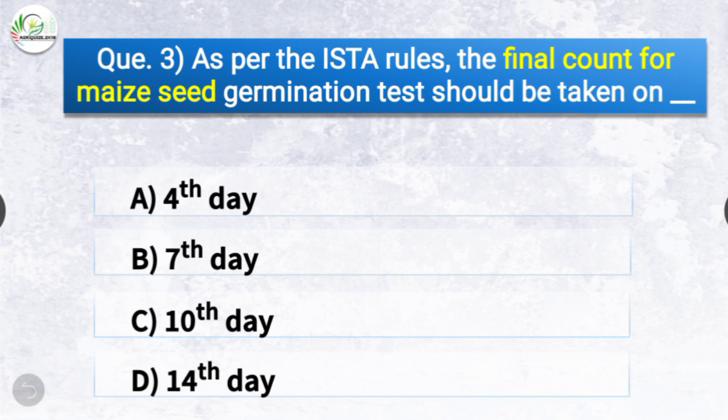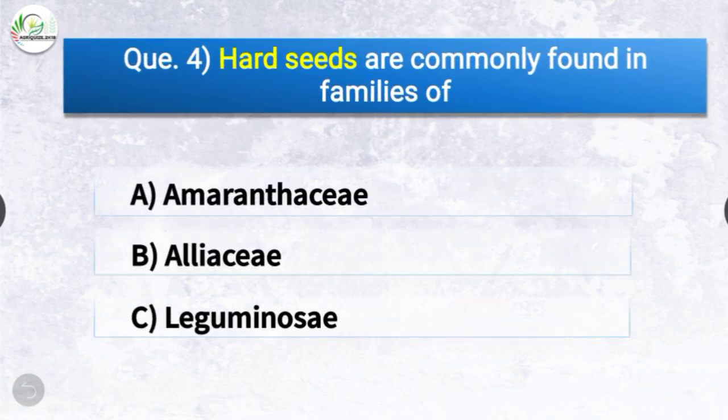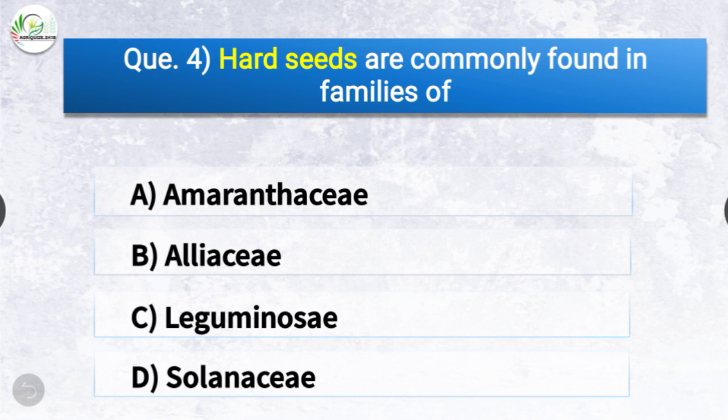Question number three: As per the ISTA rules, the final count for maize germination test should be taken on — the options are fourth day, seventh day, tenth day, or fourteenth day. The correct answer is option B — seventh day. As per ISTA rules, the final count for maize germination test should be taken on the seventh day.